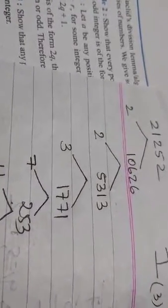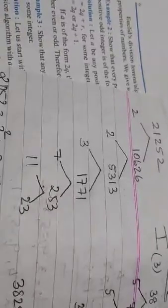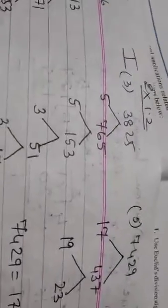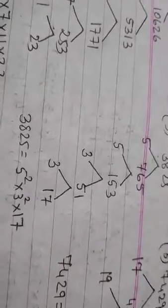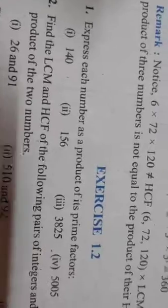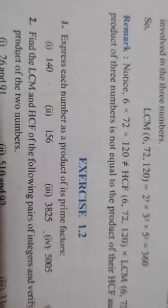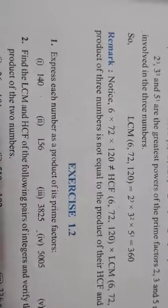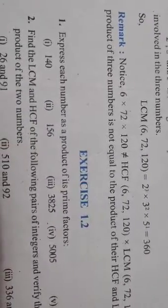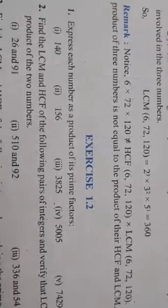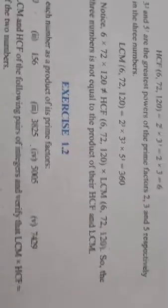In exercise 1.2 you have sums of this type. I didn't pick up all the sums — obviously they are very simple. So if you open exercise 1.2, the first question asks you to express numbers as products of prime factors. I have picked up question numbers 3 and 5 from that first section: 3825 and 7429.